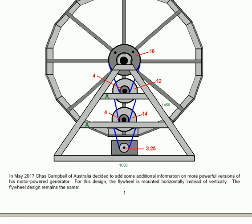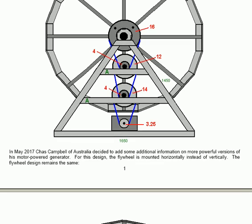In May 2017, Chas Campbell of Australia decided to add some additional information on more powerful versions of his motor-powered generator. For this design, the flywheel is mounted horizontally instead of vertically. The flywheel design remains the same.